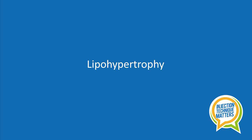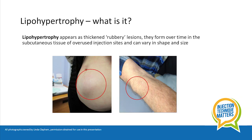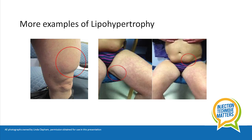I'd like to take this opportunity to talk to you about lipohypertrophy. As you can see in this slide, lipohypertrophy appears as thickened rubbery lesions that develop over time if the injection site is overused. You can see in the pictures that there are raised shiny areas on the skin.